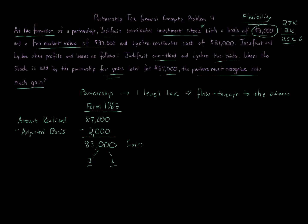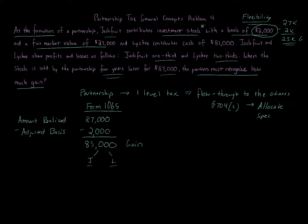Think about what's happening here. If Jackfruit is in a very high tax bracket and was to sell the stock before contributing, Jackfruit would owe high taxes on that twenty-five thousand dollar gain. But if Jackfruit contributes the property to a partnership and Lychee is in a lower tax bracket, Jackfruit could shift that gain to Lychee. Congress and the IRS saw this and put a stop to it with a special rule called Section 704(c) — the pre-contribution gain rule.